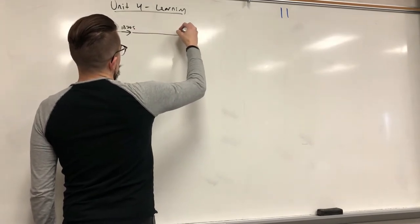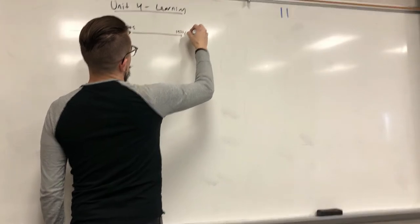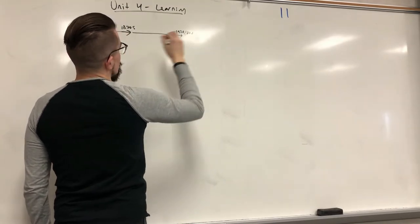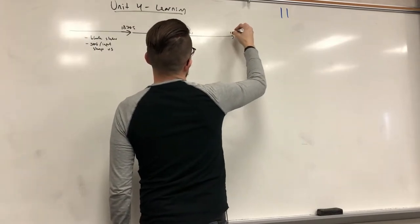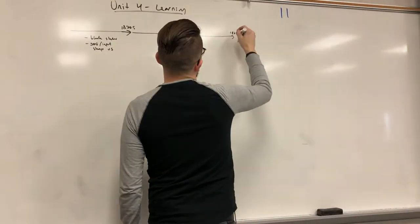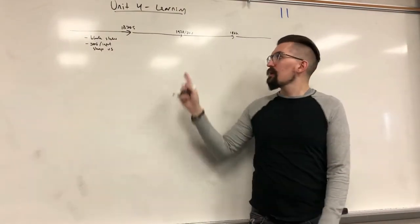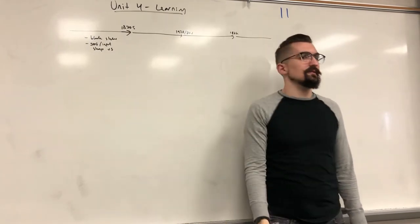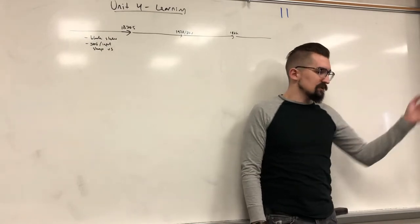From the 1870s till about the 1920s or 30s it's going to be different, and then it's going to be different again until about the 1960s where it's going to be a bit more evenly mixed. Between the 1870s and 1820s-30s we're going super nurture, being a blank slate.